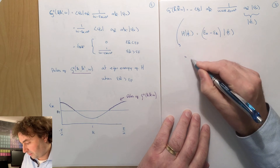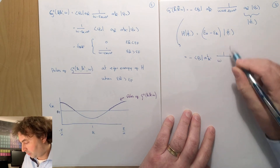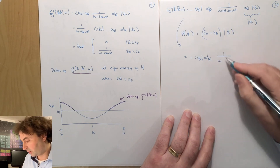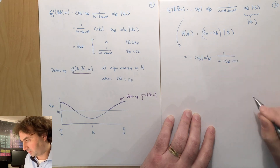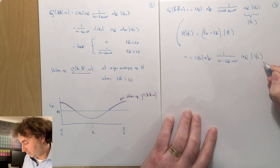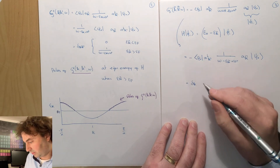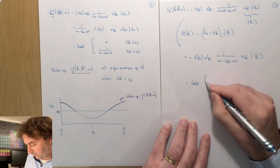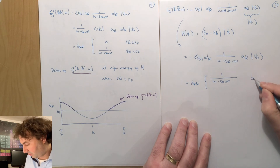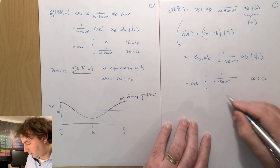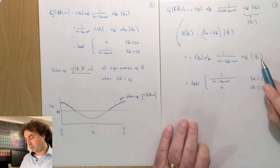If we look at our G minus, and replace the Hamiltonian by E_0 minus epsilon_k, then E_0 minus E_0 is zero, so we have minus epsilon_k plus i0+. This gives G-(k, k', omega) equal to delta_{k,k'} times 1 over (omega minus epsilon_k + i0+) for the case where the energy is smaller than the Fermi energy, and zero for the case where the energy of the particle you remove is larger than the Fermi energy, because then you cannot remove that particle.